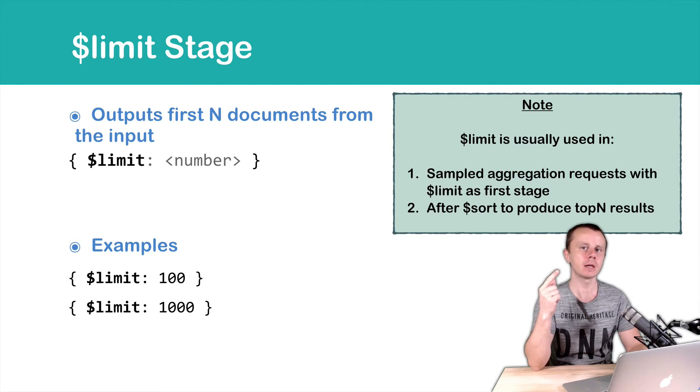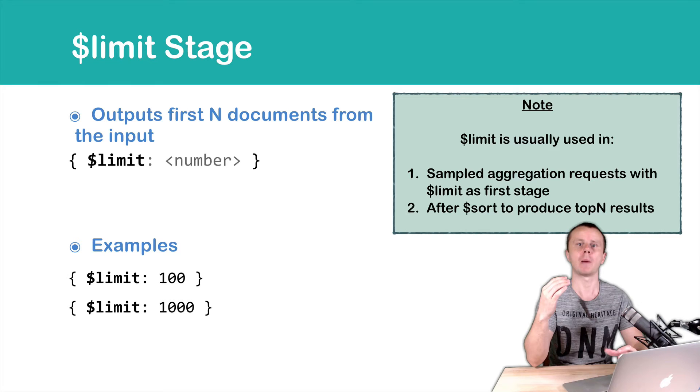The first case is when you have a very large collection with a lot of documents and you want to perform some sample aggregation request. So you want to take just the first couple thousand documents and perform some grouping or projecting.